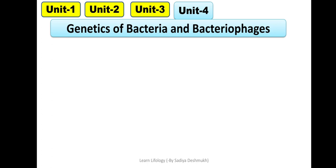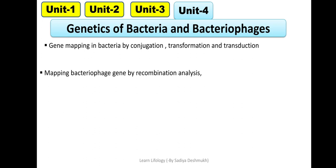The last unit is Genetics of Bacteria and Bacteriophages. Here we have to do gene mapping in bacteria: conjugation, transformation, and transduction. These are three methods by which you do gene mapping in bacteria. Then mapping of bacteriophage genes by recombination analysis, deletion mapping, and complementation. In bacteriophage, we have to use these methods. And lastly, transposons, which you have already studied in BSc. So here we are going to do gene mapping for bacteria and bacteriophage. What is a bacteriophage? The viruses which can infect bacteria.